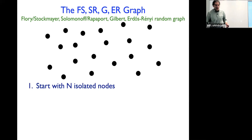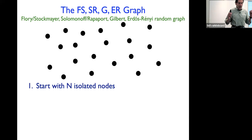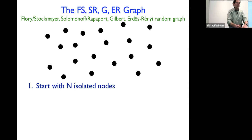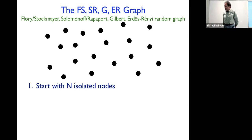The idea behind the Erdős-Rényi random graph is as simple as can be. You start with N isolated nodes and then put in links to join them. One way of defining it is G(N, L) — the graph with N nodes and L links. Because this is a lecture on non-equilibrium processes, I want to turn this into a kinetic process, which provides a nice way of thinking about and solving the problem.